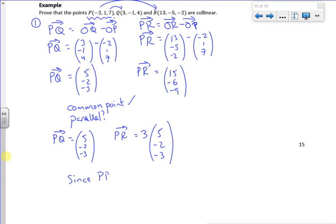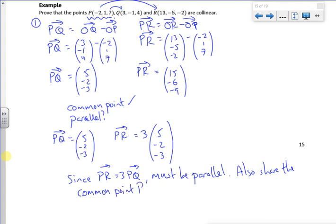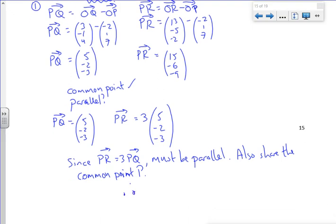So since PR is 3 lots of PQ, it must be parallel. They also share the point P, a common point. Therefore, the points P, Q, and R are collinear. Can't spell collinear then. I think it's 2 l's, 1 i. But the l's and the i's all mashed together when they're typed. There. There we go. That's done. 6 minutes in. I think I'm going to stop that and have a break. Right. See you later. Bye-bye.